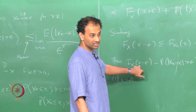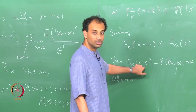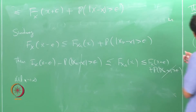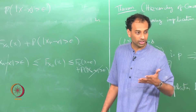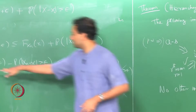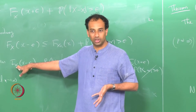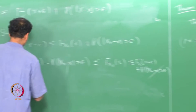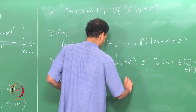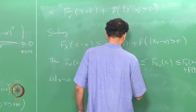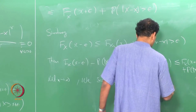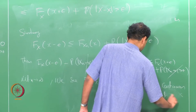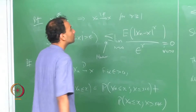If F_X is continuous at X, we can send epsilon to 0 and there will be a sandwich effect. When epsilon is very small, the left limit and right limit will be equal, and therefore F_{X_n}(X) converges to F_X(X) at all points of continuity of F_X.